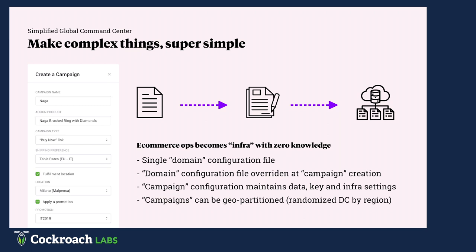How Elliott works: we have a single domain configuration, meaning each store comes with a templatized configuration file. When they create these campaigns, they essentially override them with specific attributes and properties — anything from distribution settings. We then do a variety of things with those keys and settings, and in the case of Cockroach, can add geo partitioning. For example, if you're creating campaigns for a brand based in North America but now selling in Germany and China, all those settings get updated on the fly — the operator doesn't know anything going on in the background.